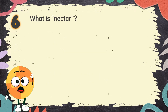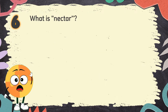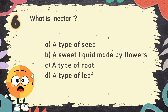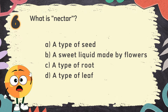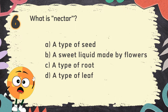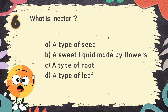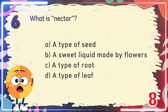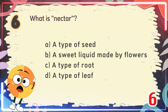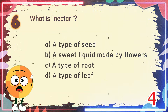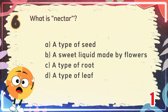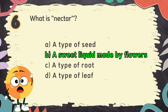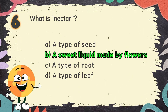Number 6: What is nectar? The choices are: A. A type of seed, B. A sweet liquid made by flowers, C. A type of root, D. A type of leaf. The correct answer is B. A sweet liquid made by flowers.